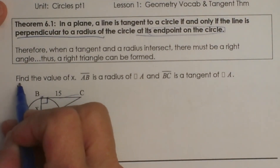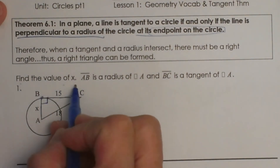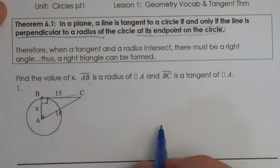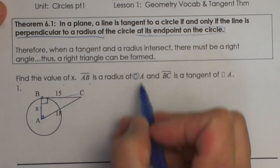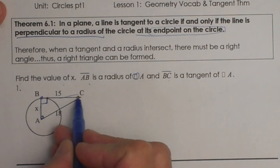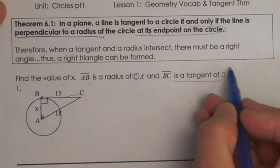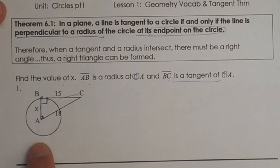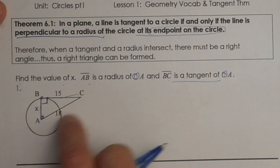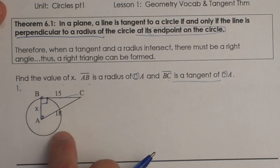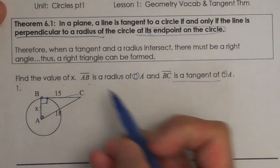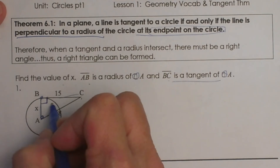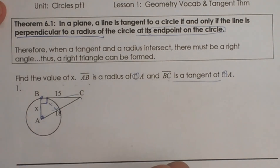Let's look at the examples here. Find the value of x. AB is a radius, so here is my radius — that means A is the center of circle O, and BC is tangent to circle O. So I have my line of tangency there. Now we have a right triangle, so I need to find a missing side. I'm going to use the Pythagorean theorem where this is a leg, this is a leg, and AC is my hypotenuse because it is opposite the right angle.